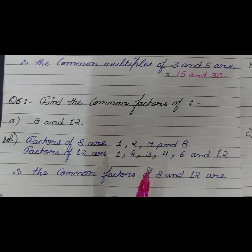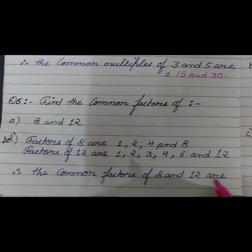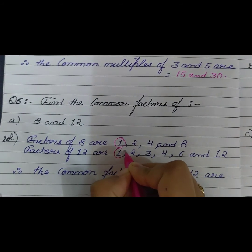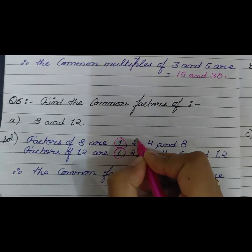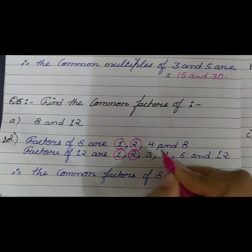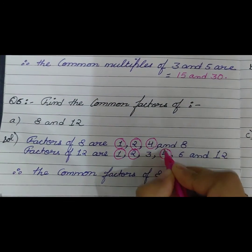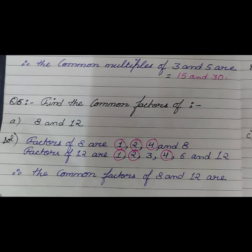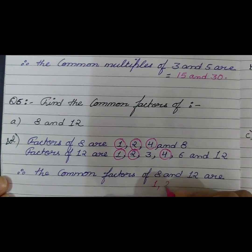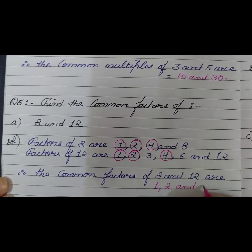Now we need to observe the common factors, so let's circle the common factors. Here 1 is common, 2 is common, and 4 is common. Therefore the common factors of 8 and 12 are 1, 2, and 4.